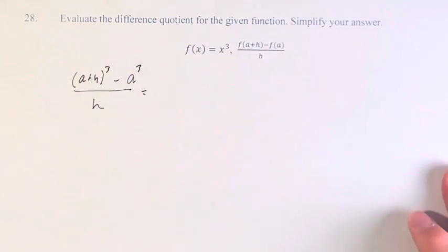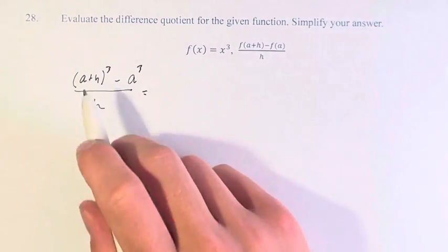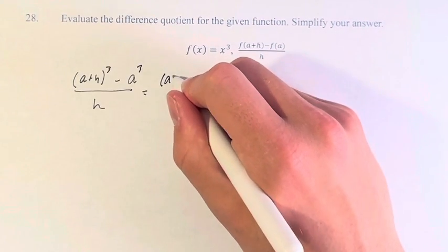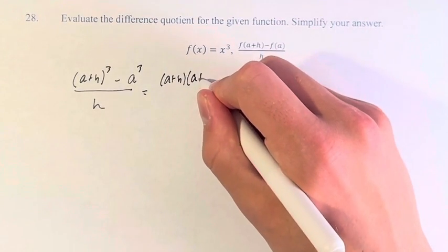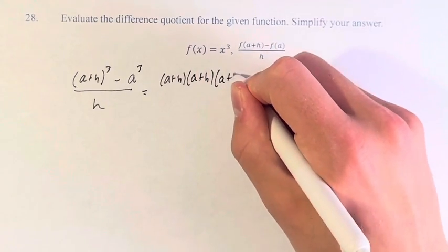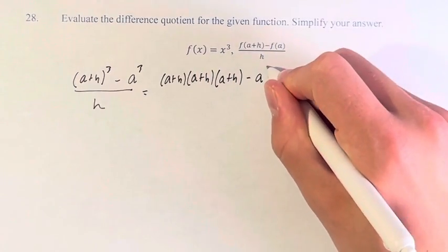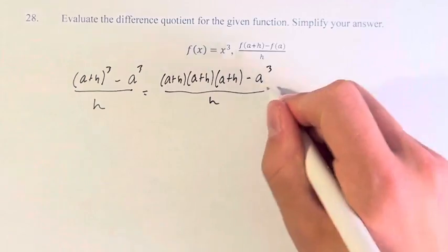And now we just have to simplify this expression. So expanding out a plus h cubed, a plus h times a plus h times a plus h. Subtracting a cubed from this, the denominator stays the same.